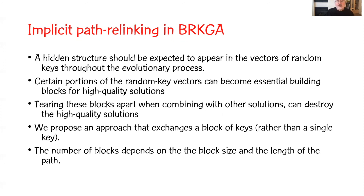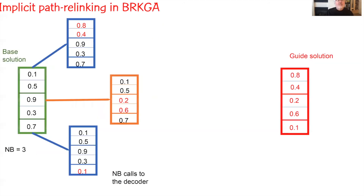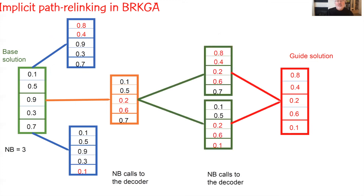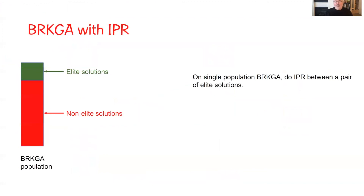We propose an approach that exchanges blocks of keys rather than a single key. The number of blocks depends on the block size and the length of the path. With three blocks, we insert each block sequentially: the first block, the second block, and the third block. Instead of n calls to the decoder, we make nb (number of blocks) calls to the decoder — fewer calls, and much faster.